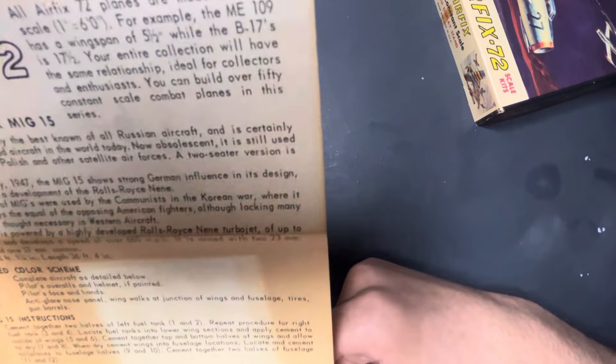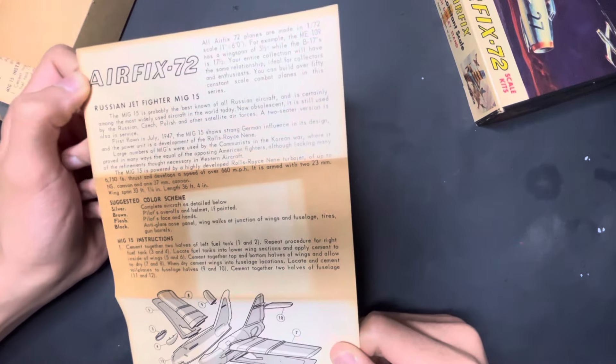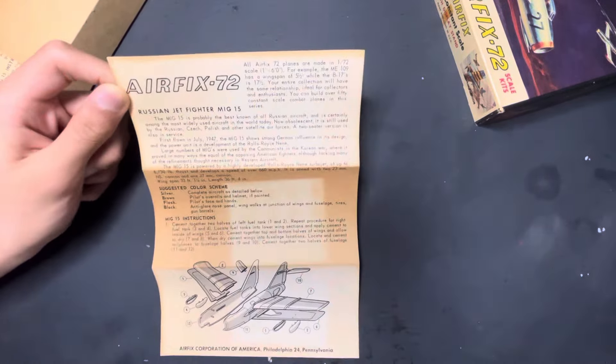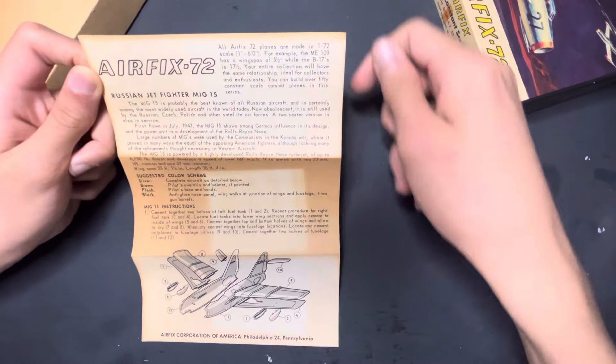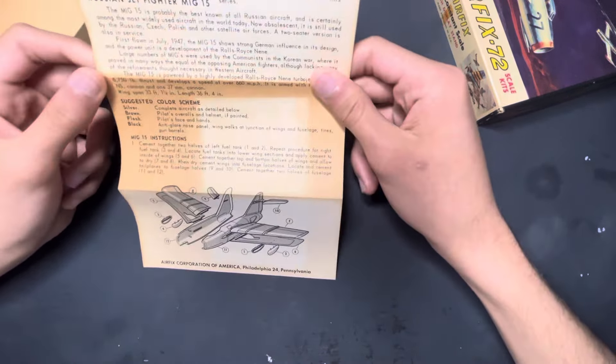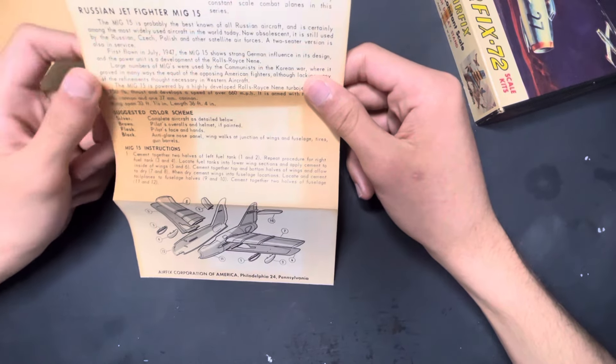This has like the overview of how they make it. I don't know if this is still true for Airfix. I haven't built one of their most recent planes. I plan on getting maybe their Buccaneer. And this has a general overview: two-seater, flown by these countries. Oh, first one in 1947. I didn't know that.